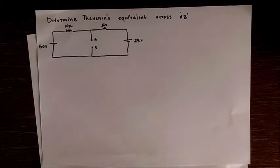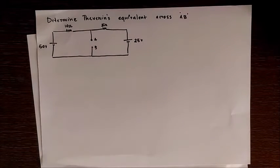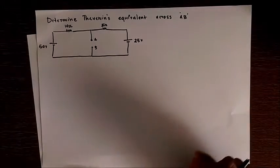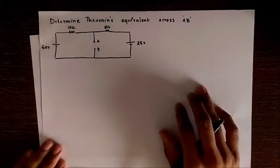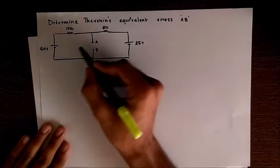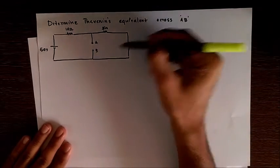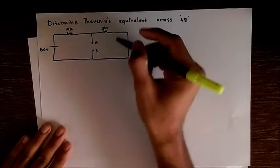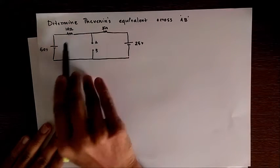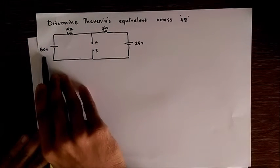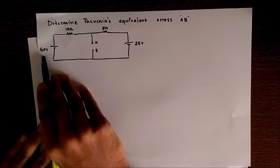So let's understand the application of Thevenin's theorem using a simple example. Here I have taken a question with finding the Thevenin's equivalent across AB, and the elements are 10 ohm, 5 ohm resistors and 25 volt and 50 volt voltage sources.